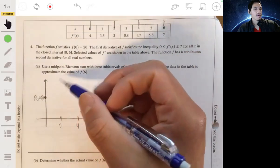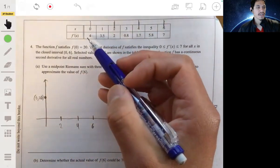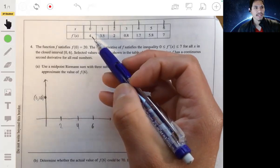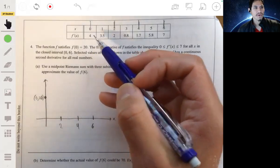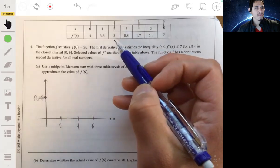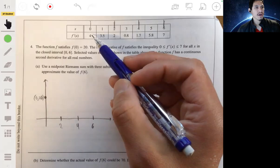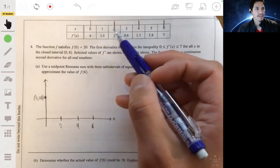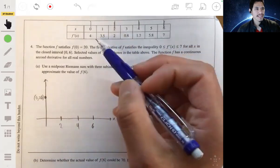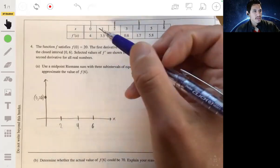Now, if we know that the function f, if we know f prime is changing at these rates, 4, 3.5, and 2, this will allow you to get an idea of what the value of f of x would be at 1, 2, and all these other values by using this derivative.